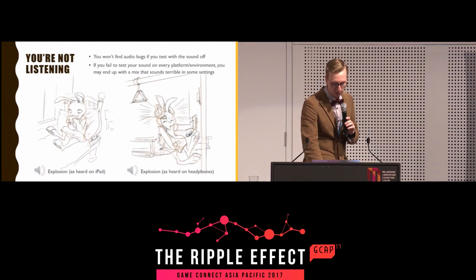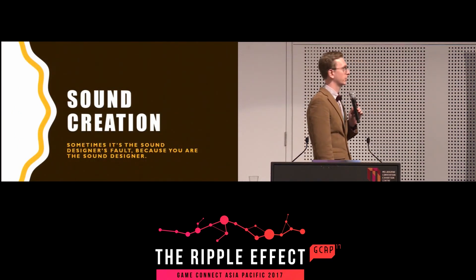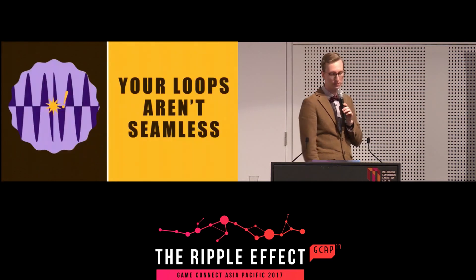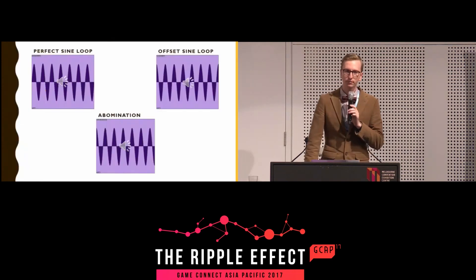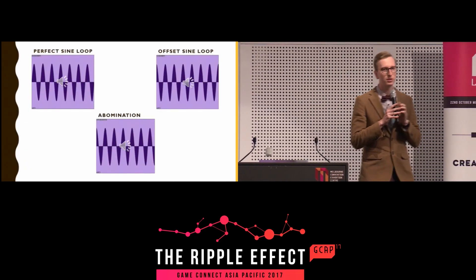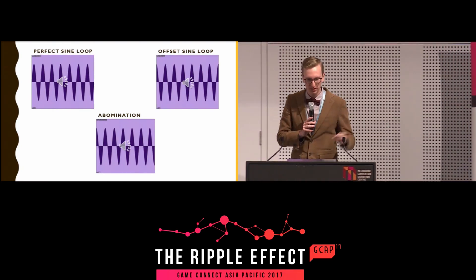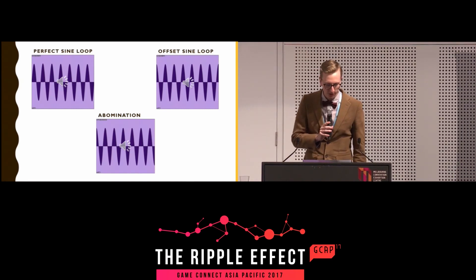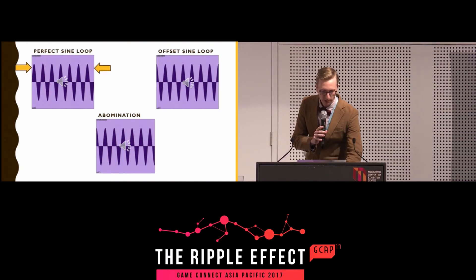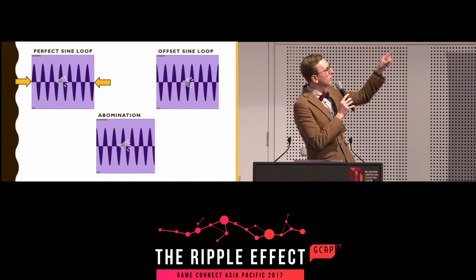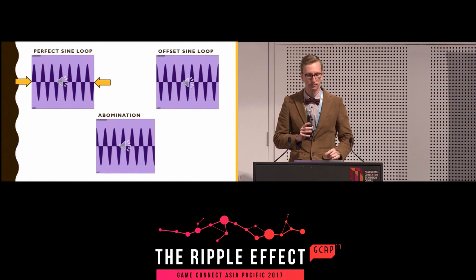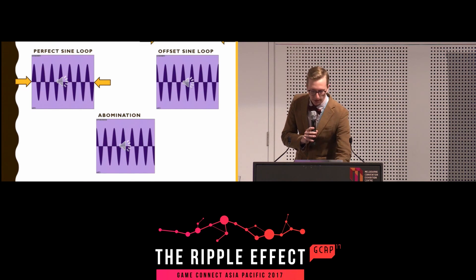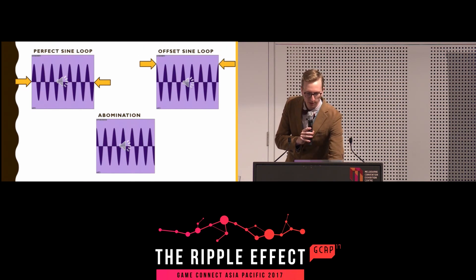If you are making your own sounds, these are some of the problems you're probably making for yourself. Your loops aren't seamless. For a perfect sine loop — just a C4 sine wave — you need zero-point crossings. When you start and end your sounds, you want the waveform line to be at the zero point. This is what a normal sine wave loop sounds like — very nice. This is what happens if you've cut it at the wrong spot, not at a zero-point crossing.